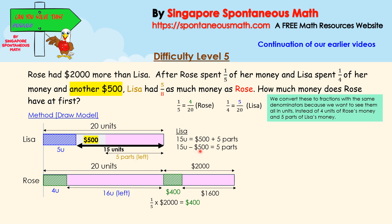So 15 units minus $500 equals 5 parts. In order to get one part, we take this whole thing divided by 5. So 15 divided by 5 would be 3 units, and $500 divided by 5 gives us $100. So to get 8 parts, we multiply this whole thing by 8. So 3 times 8 gives us 24, and 100 times 8 gives us $800.